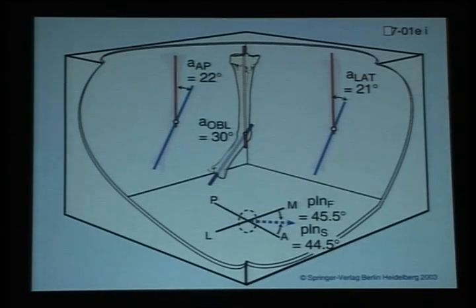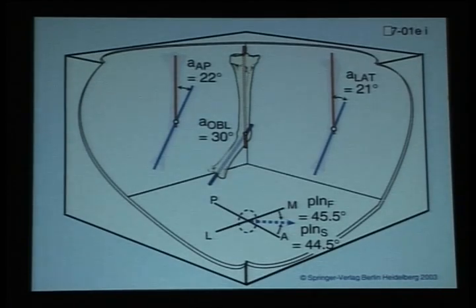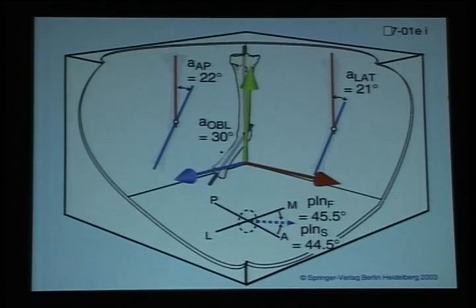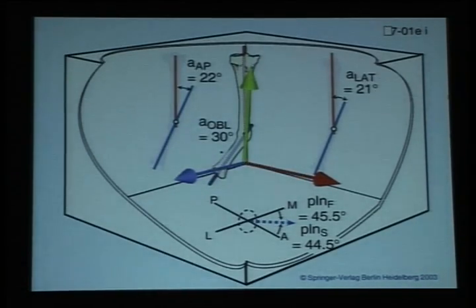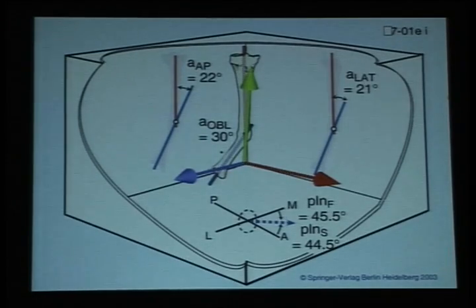If you look at a deformity like this, which is an oblique plane deformity, where on the AP you see a deformity as well as on the lateral — this is in 3D space and can be defined in terms of how much deformity exists in relation to the x, y, and z axes, known as 3D coordinates.